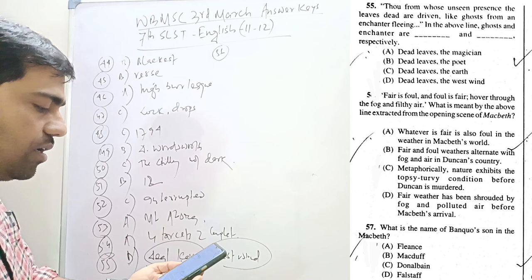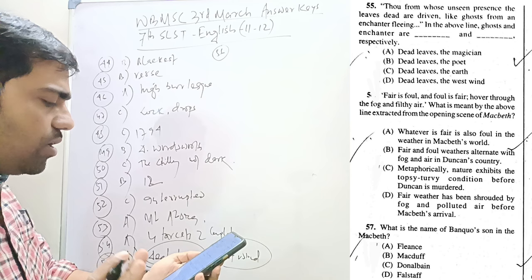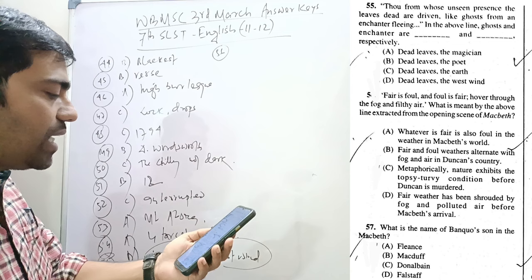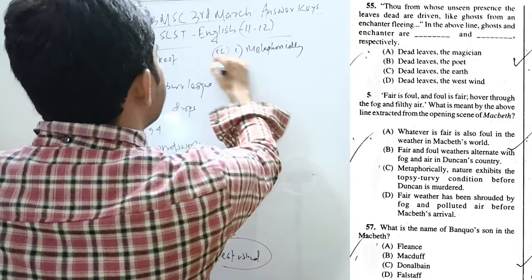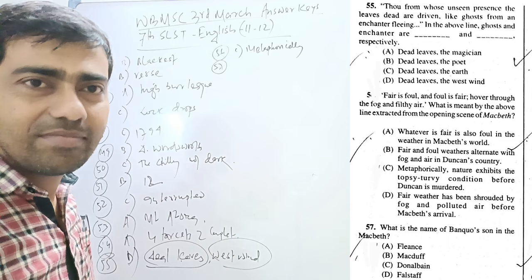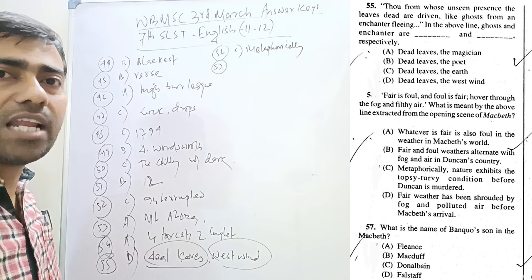Fair is foul and foul is fair, hover through the fog and filthy air. What is meant by the above lines extracted from the opening scene of Macbeth? So, fair is foul, foul is fair. It is a chiasmus. So, whatever is fair is also foul in the weather map. Now, it is metaphorically, it is a metaphorical statement. So, metaphorically, it states that nature exhibits the topsy-turvy condition before Duncan is murdered. This is called the objective correlative. The nature, the setting is showing the same things what the inner self of one's character is showing.